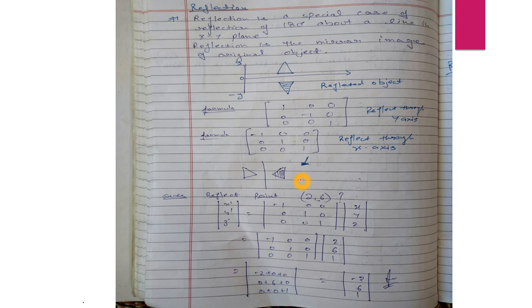We have already made a video, so today our fourth part is reflection. We will solve a numerical problem. Reflection is a special case of 180-degree rotation about a line in the xy plane. When we rotate, it has a reflection effect. You will see here in the diagram on the rectangle when we rotate it, its reflected object.